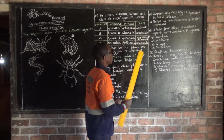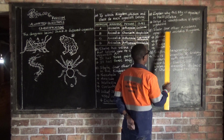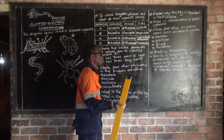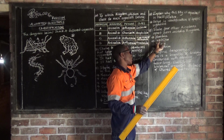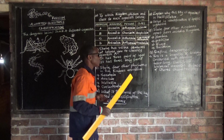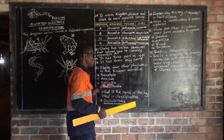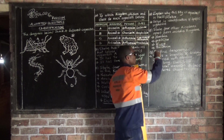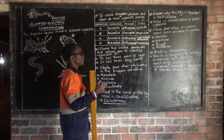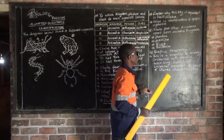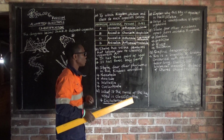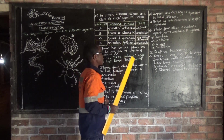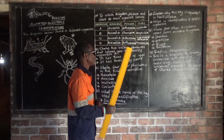Question F asks: state four other kingdoms apart from the Animalia kingdom. Apart from the animal kingdom, we have the Plantae kingdom, the Protista, the Fungi, and Bacteria. In case you come across a question asking which kingdom the mushroom belongs to — the mushroom belongs to the kingdom called Fungi.